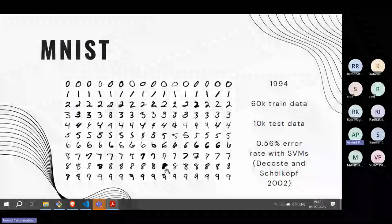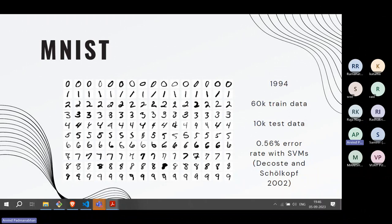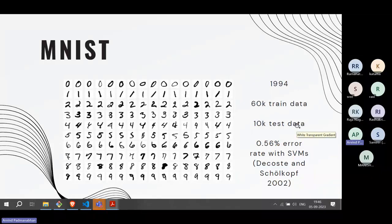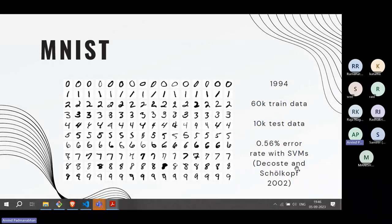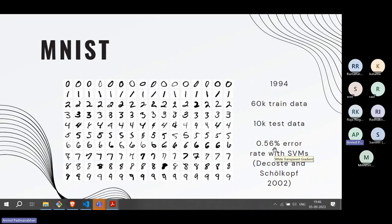This is how people started applying neural networks to image classification. The MNIST dataset has about 60,000 training samples and 10,000 test samples. The field advanced through the 1990s and by 2002 they had achieved almost human performance — an error rate of 0.5% using SVMs (support vector machines). By 2010, neural networks achieved similar or better performance, like 0.4% error on MNIST.